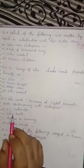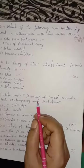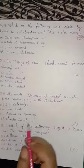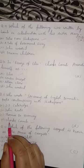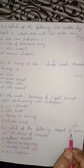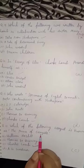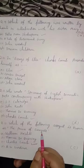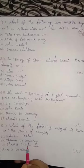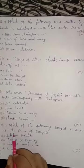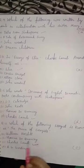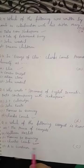Question 11. Who wrote 'Specimens of English Dramatic Poets Contemporary with Shakespeare'? The right answer is option D — Charles Lamb. Question 12. Which of the following essayists is known as 'The Prince of Essayists'? This is one of the favorite questions frequently asked in examinations. The right answer is Charles Lamb — option C.